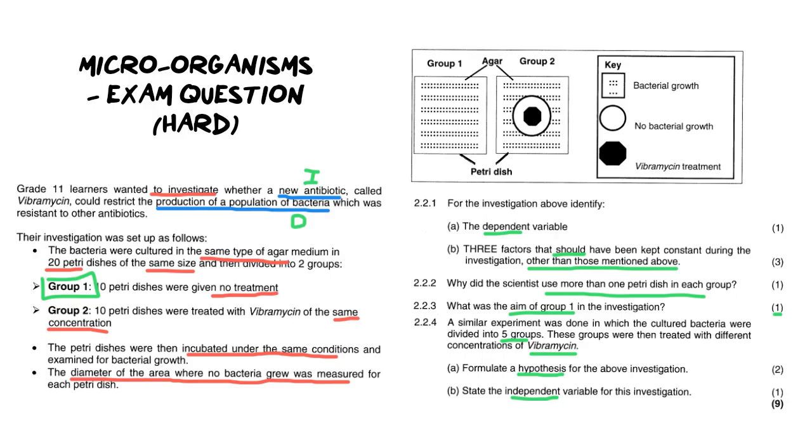So what possibly could be our hypothesis? Well this experiment is slightly different because if you notice here it says different concentrations of Vibromycin which means that each of those five groups are going to get different amounts. So now your hypothesis should be something along the lines of as the concentration of Vibromycin increases so will the bacterial population decrease. Or maybe you will say if the antibiotic level is too low then it will have no effect on the bacterial population. You need to make a prediction. Remember that's what a hypothesis is.